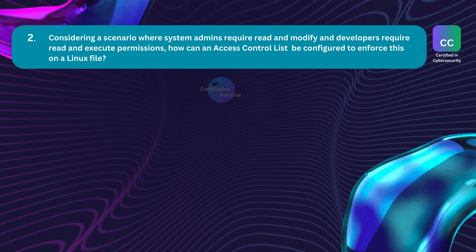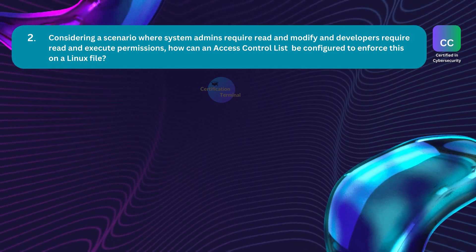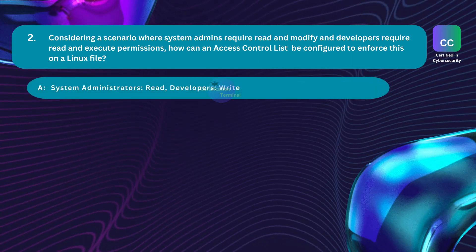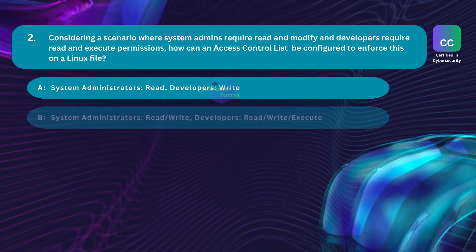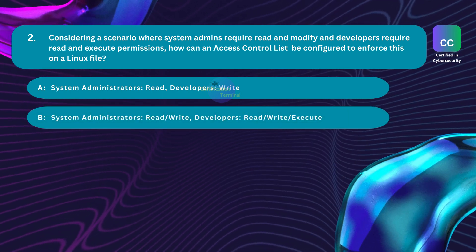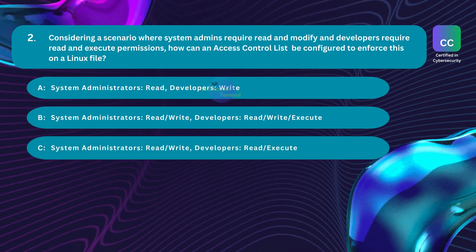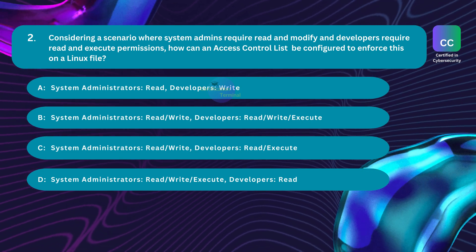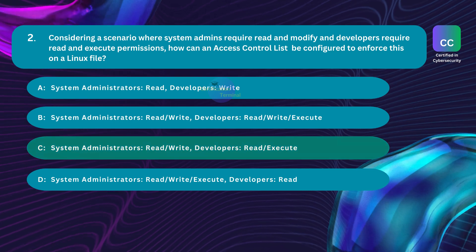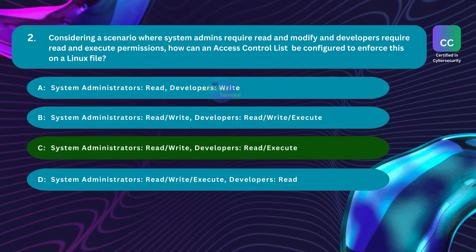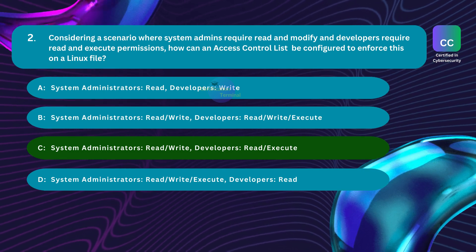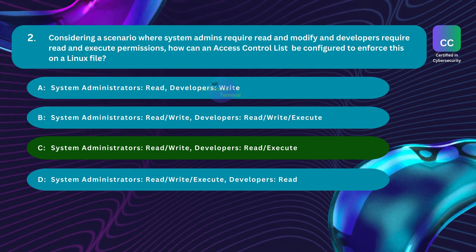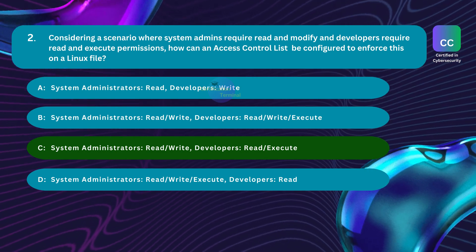Question number 2. Considering a scenario where system admins require read and modify, and developers require read and execute permissions, how can an access control list be configured to enforce this on a Linux file? Option A: system administrators — read, write; developers — write. Option B: system administrators — read, write; developers — read, write, execute. Option C: system administrators — read, write; developers — read, execute. Option D: system administrators — read, write, execute; developers — read. The correct answer is Option C: System Administrators — Read, Write; Developers — Read, Execute. System administrators get full control with read and write permissions, allowing them to modify the file content. Developers can read the file content and execute it if it's a script, but they cannot modify the content itself, preventing accidental or unauthorized changes.